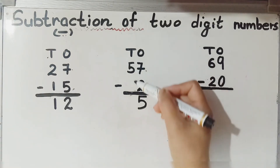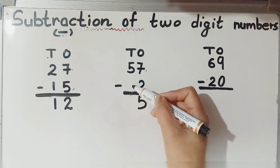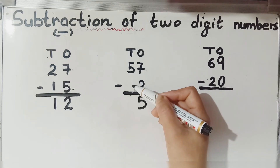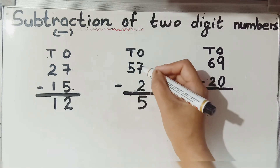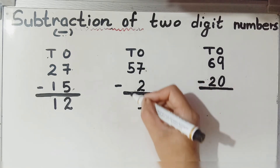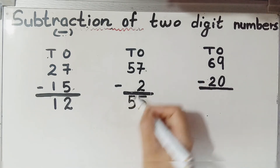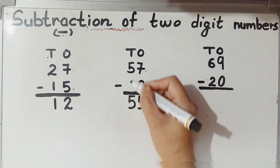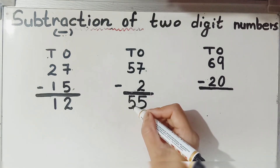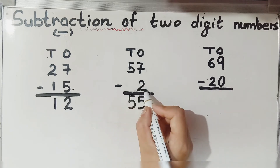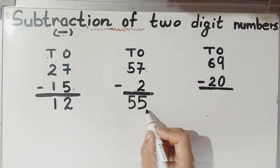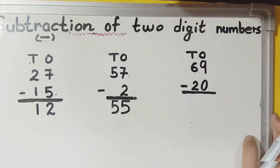Now we subtract the tens. We have five on top and no number to subtract, so there is nothing to subtract. We bring down this five. The answer is 55 — 57 minus 2 equals 55.